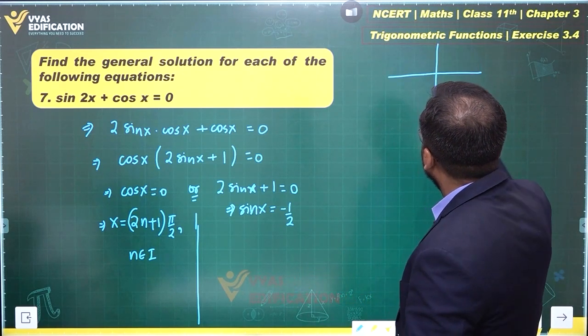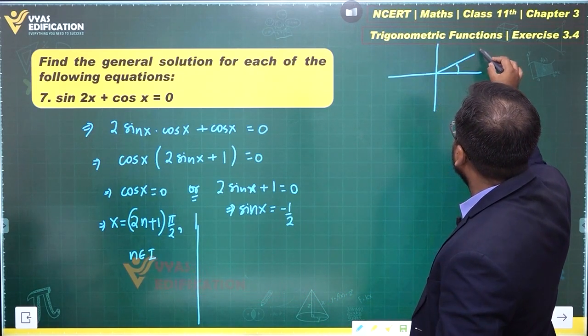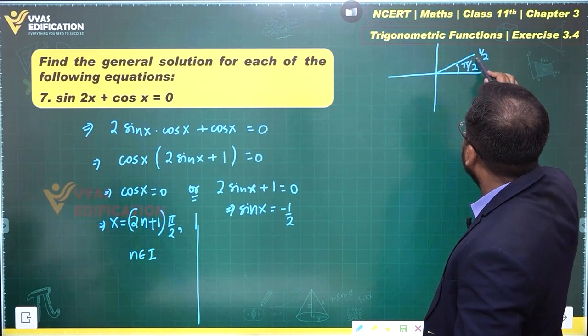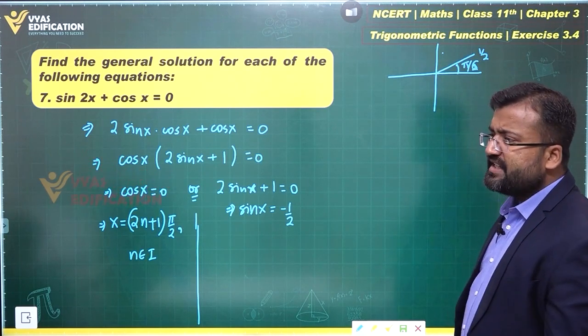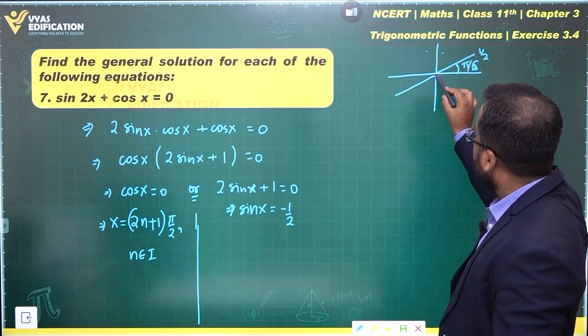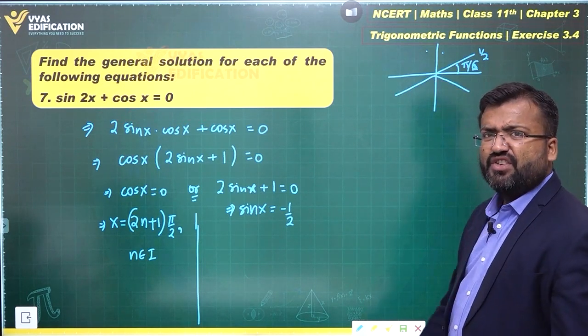And for that, I can draw the quadrant half. The value half is for pi by 6. Now in the first quadrant sin is positive, the second quadrant sin is positive. We need sin negative, so we'll have to go to this quadrant or this quadrant. Any of these.